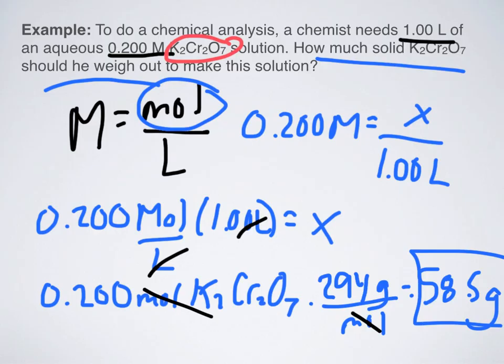So about 58.5 grams, that's how much I would need to actually weigh out. If I put that in a one liter container and filled it up with one liter's worth of water or up to that line, I would have a 0.2 molar solution of K2Cr2O7.